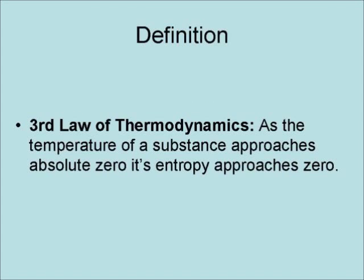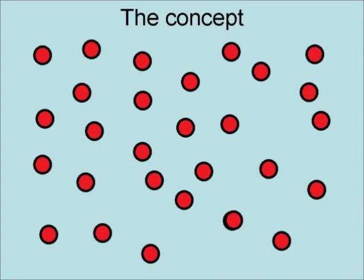The third law of thermodynamics states as the temperature of a substance approaches absolute zero, its entropy approaches zero. The concept is that because heat is a result of the motion of the molecules in an object, and that this motion causes the molecules to move around and spread out, and this causes a condition of high entropy.